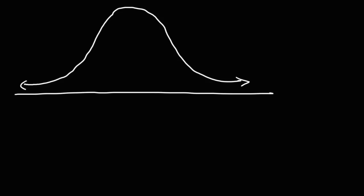The normal distribution has the shape of a bell curve. The notation uses the random variable x. For a normal distribution, you have two important parameters: the mean and the standard deviation, represented by the symbol sigma.